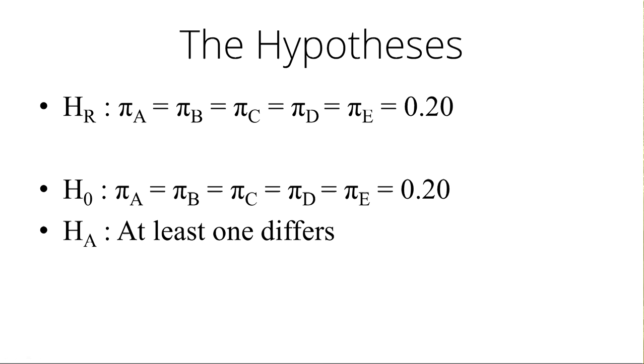Is the distribution going to be uniform? And since I actually don't know the colors off the top of my head, I haven't had Skittles for a long time, I do know that there's five colors. So the research hypothesis is the proportion of A color is equal to the proportion of B, is equal to the proportion of C, is equal to the proportion of D, equals the proportion of E, equals 20%.